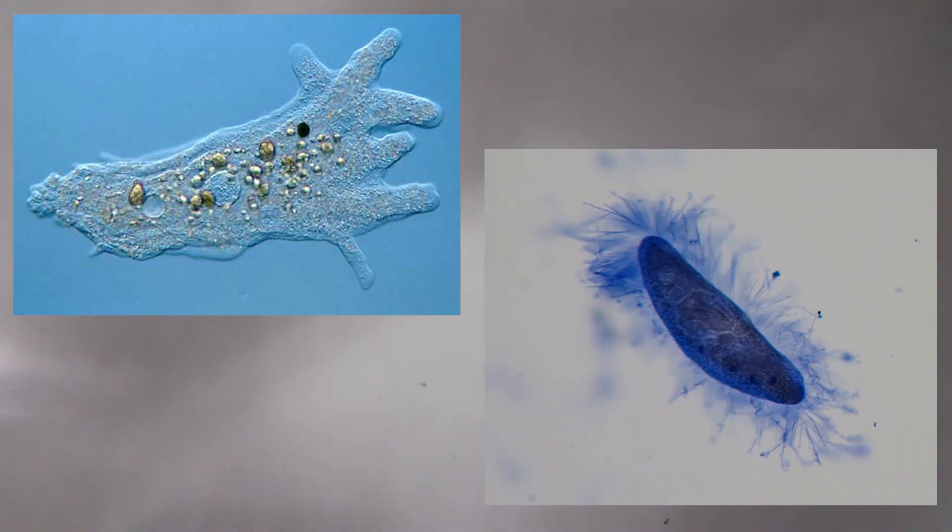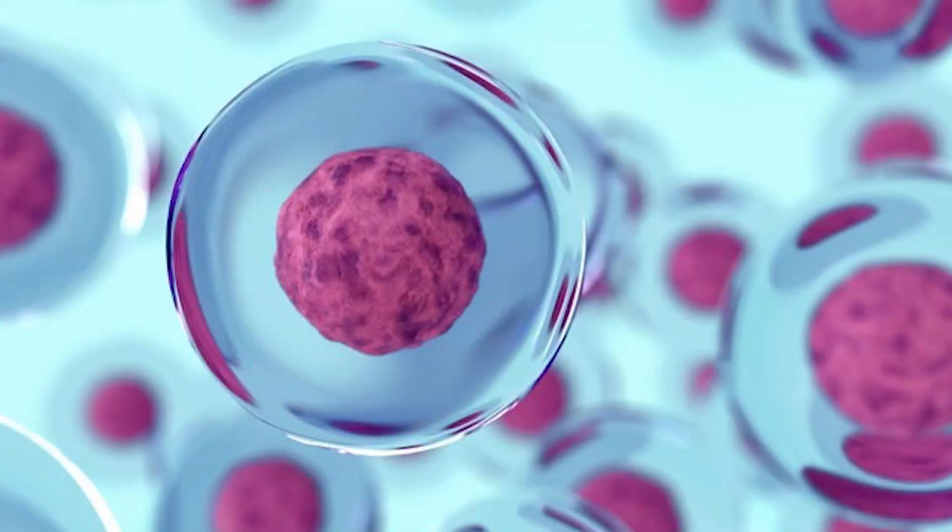Some organisms like amoeba and paramecium have only a single cell, so they are called unicellular organisms. Other organisms which are composed of many cells are called multicellular organisms. These cells perform different functions in the body and there are different types of cells.